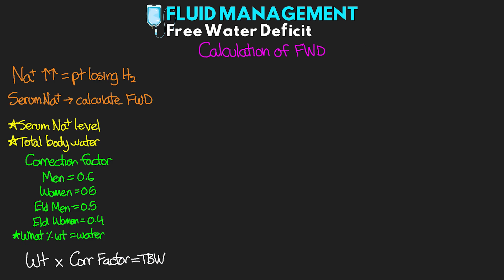Knowing the total body water, we can then use this calculation where we take the total body water and multiply it by: first, our patient's serum sodium minus 140, and then divide that by 140. Alright, so I know what you're thinking — here we go with another calculation — but let's talk through this. It's a pretty quick and easy calculation to do, so let's talk through an example here.